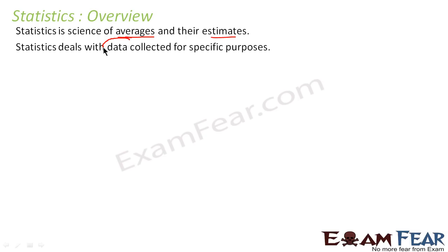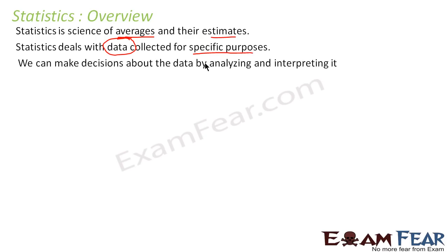In statistics we deal with data, and data has to be collected for a specific purpose. For example, when we talk about the population of India, we should only consider data that is concerned with India's population — such as age, salary, living conditions, religion, and sex. Data like the quality of roads or the weight of a fan is not relevant to population of India. When we analyze and interpret data, we can take decisions and business decisions based on statistics.